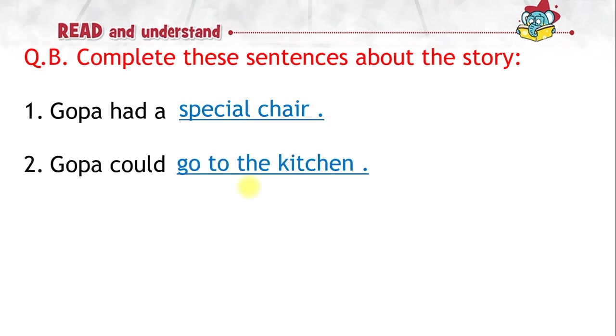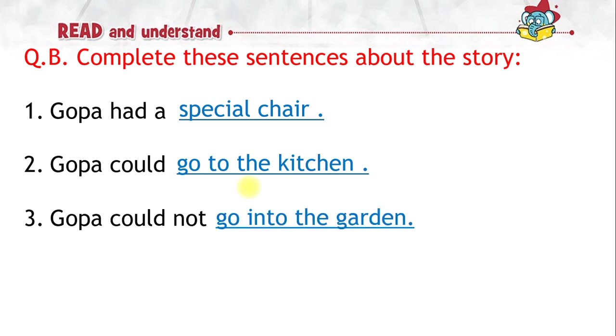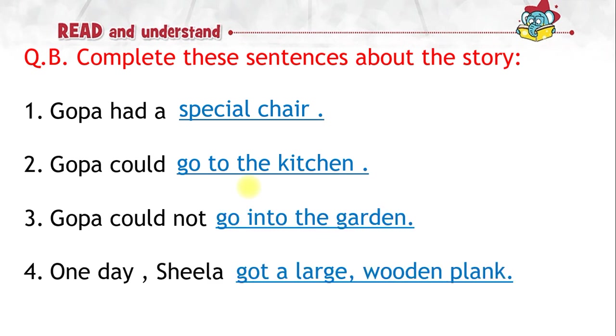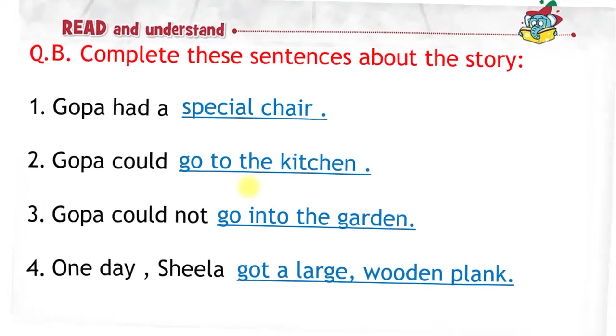Complete these sentences about the story. Goppa had a special chair. Goppa could go to the kitchen. Goppa could not go into the garden. One day, Sheila got a large wooden plank.